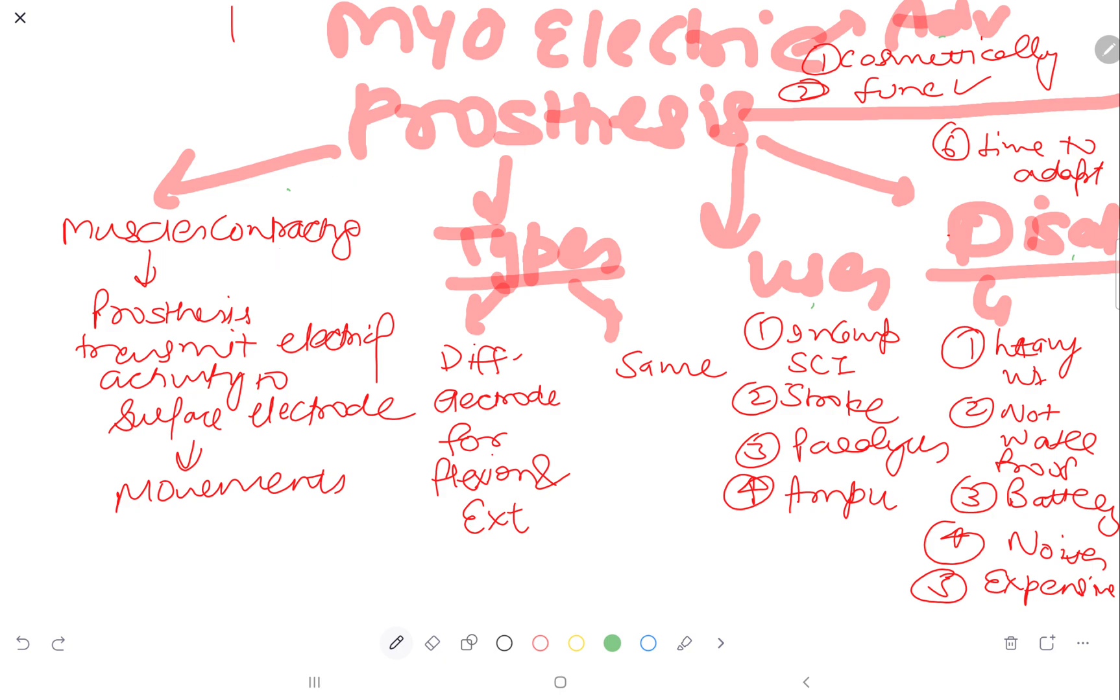Firstly, how does it work? Muscles contracting. Whenever your muscles are contracting, the prosthesis transmits electrical activity to the surface electrode, and as a result of which movement occurs.